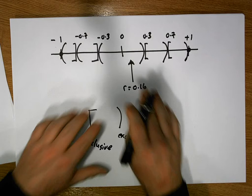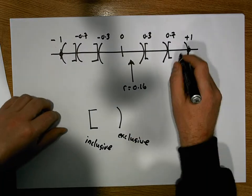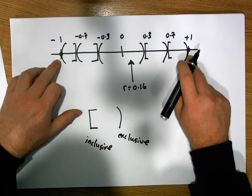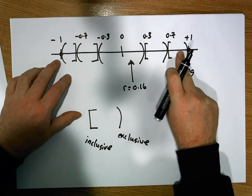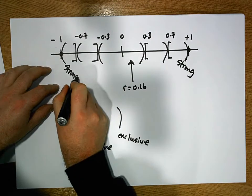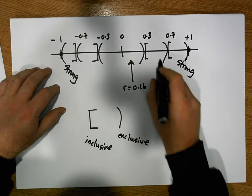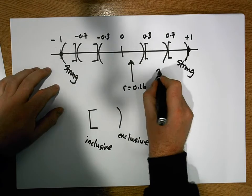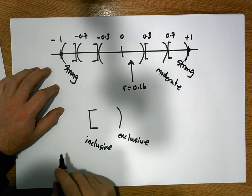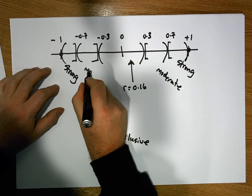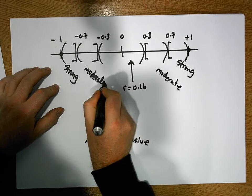To interpret these intervals, it's perfect if it's outside. There's a strong association if it's in this interval. There's a strong negative association if it's in this interval. There's a moderate association or a medium association if it's in this interval. There's a moderate negative association if it's in this interval.